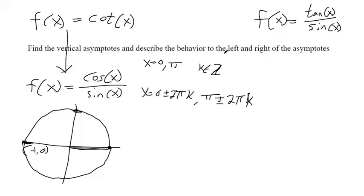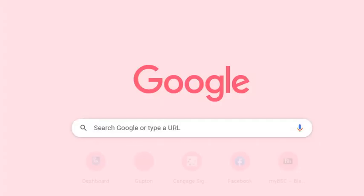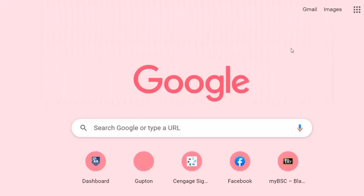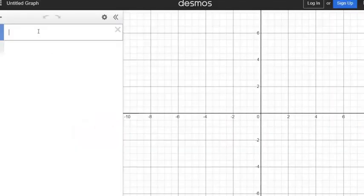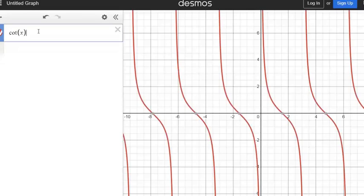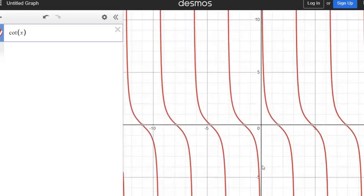And we're asked to describe the behavior to the left and the right of the asymptotes. That's where we'll use a graphing calculator. Here's a graph of cotangent of x. And then here's that vertical asymptote at x equals zero. So the behavior to the left means think about numbers that are slightly less than zero. This thing is going towards negative infinity.